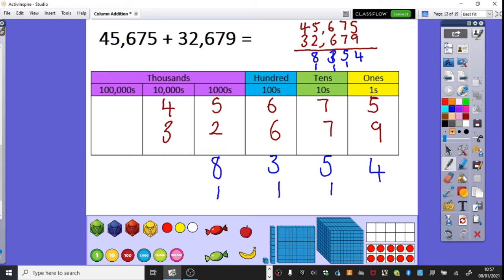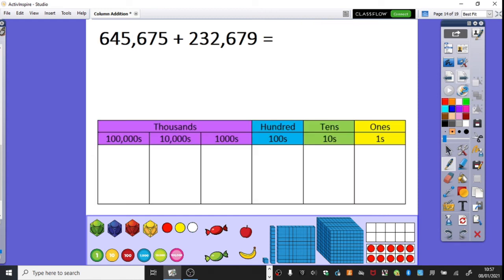And finally then, 40,000, four 10s of 1000s add three 10s of 1000s. 30,000 is 70,000. So we've got the answer of 78,354. And you can see we've lined that up really carefully and thought about our carrying as we've gone along.